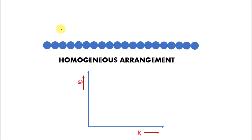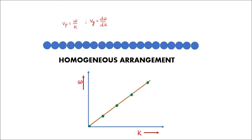We can represent the velocity of independent waves as Vp, the phase velocity, where phase velocity is omega by k. The velocity of the group of waves is the group velocity Vg, which is d omega by dk. In case of a homogeneous arrangement, the phase velocity and the group velocity are both the same. That would be possible only when omega versus k is linear, meaning that irrespective of the value of omega and k, the velocity of waves through this homogeneous arrangement is constant.